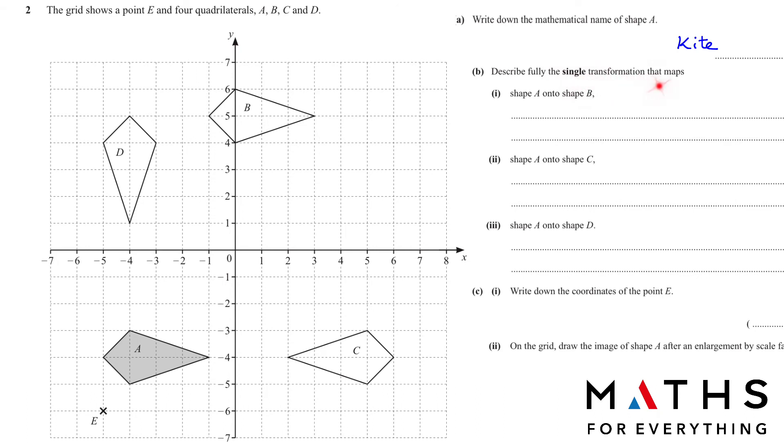Describe fully the single transformation that maps shape A onto shape B. You can see there is no change in this shape B. Only it has been translated. It has been shifted. So it's translation. And we have to write the translation in column vector. The top represents the change in X, which is horizontal, and Y, which is vertical. If it's positive, it moves to the right. And if it moves to the left, your X value is negative. If it goes up, your Y is positive. If it goes down, Y is negative.